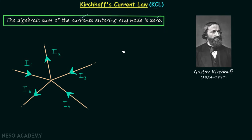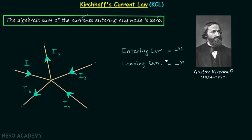You have to follow one convention: the currents entering a node will have a positive sign and the leaving currents will have a negative sign. This is the convention we follow in KCL, and note that this convention is opposite in nodal analysis. For now, just remember that entering current is positive and leaving current is negative.